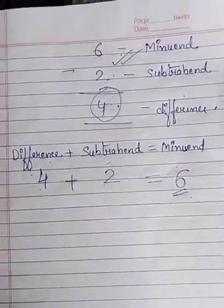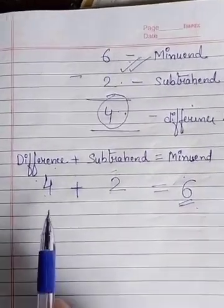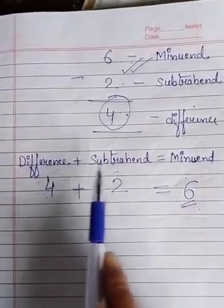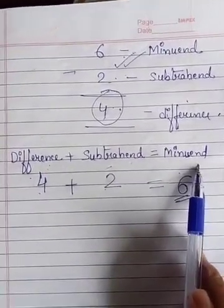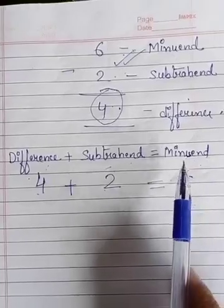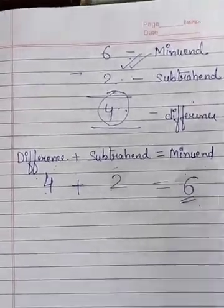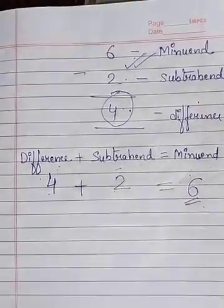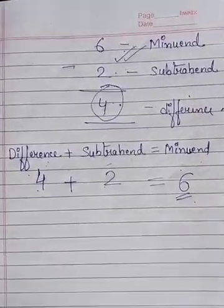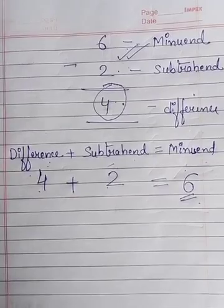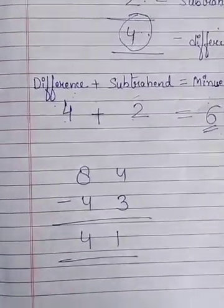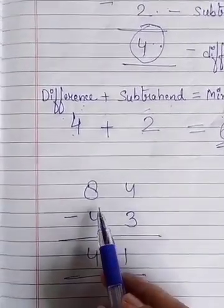So we have to apply the formula: difference plus subtrahend equals minuend, if we want to check whether our answer is correct or not. Now let's take another example.